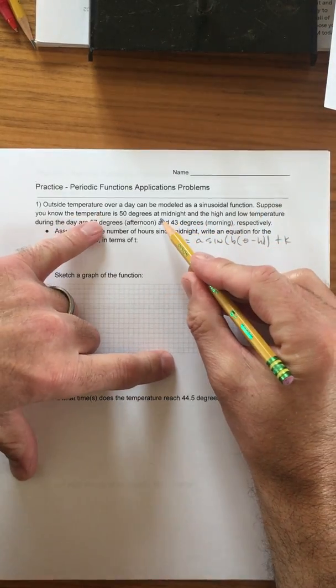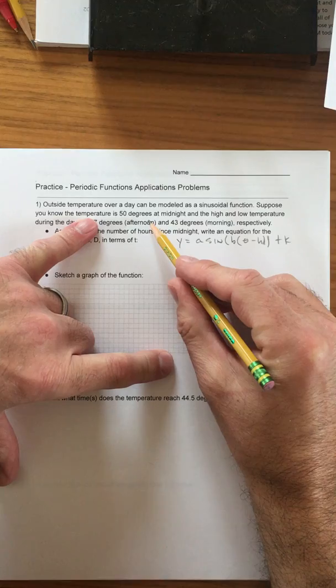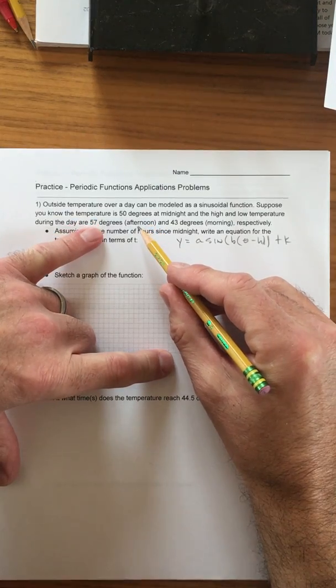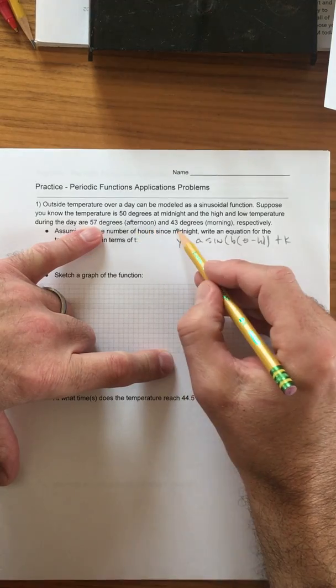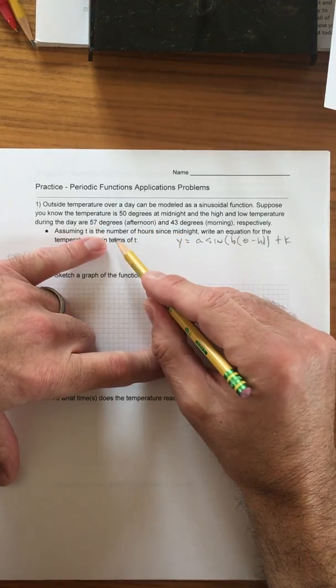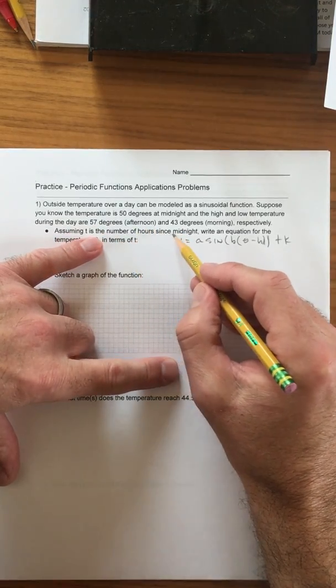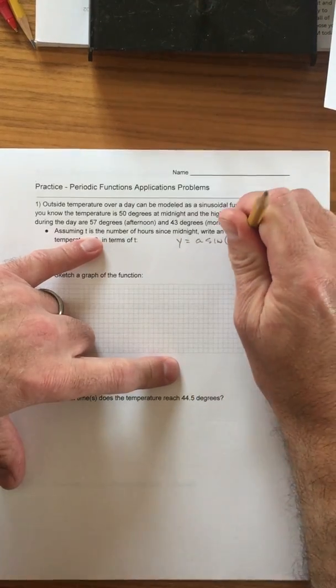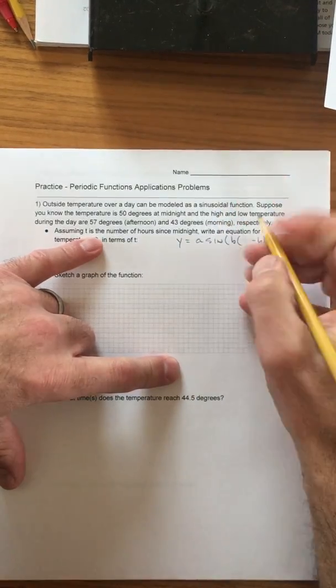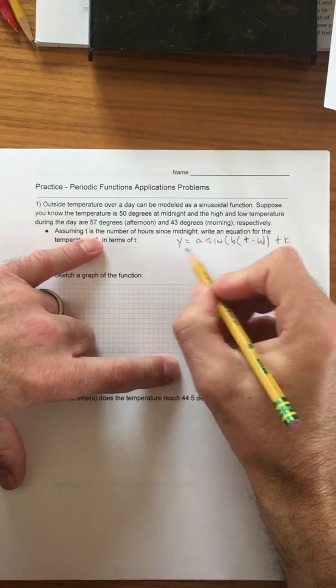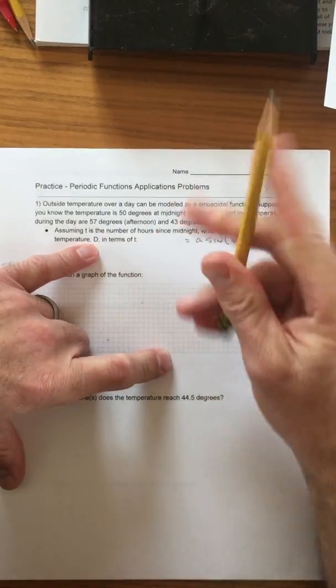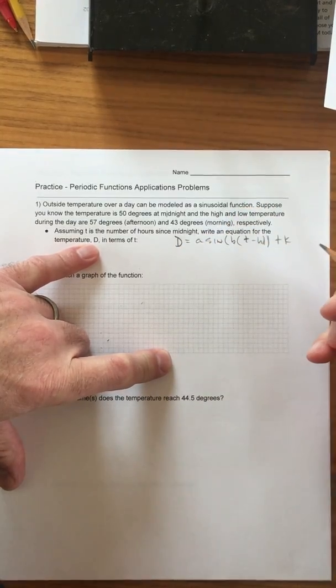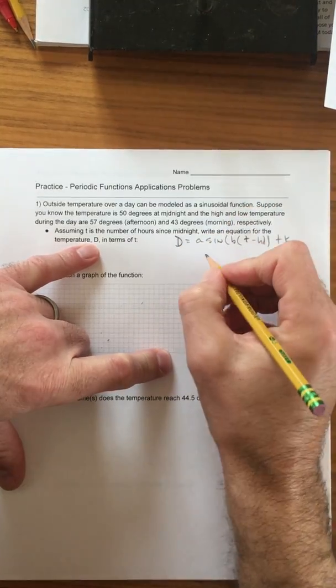Suppose you know the temperature is 50 degrees at midnight and the high and low temperature during the day are 57 and 43. Assume t is the number of hours since midnight. So instead of a theta here we're gonna have t. Write an equation for the temperature D. So we need to figure out what are the a, b, h, and k values.